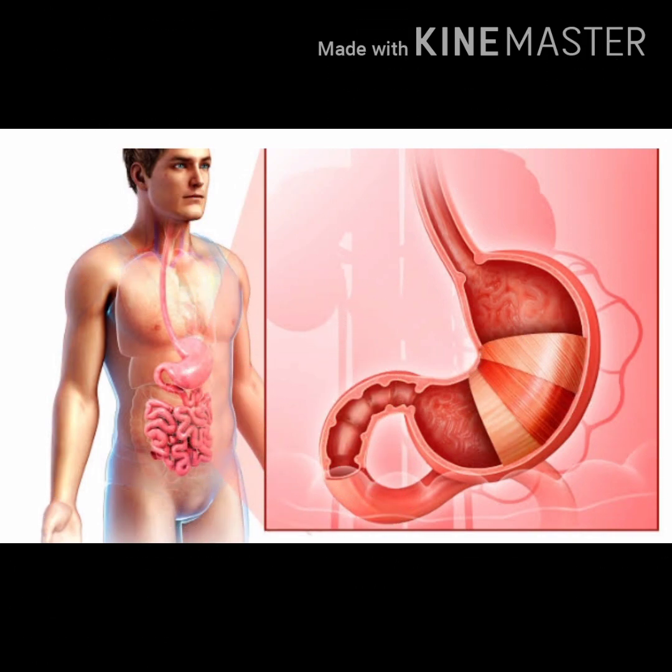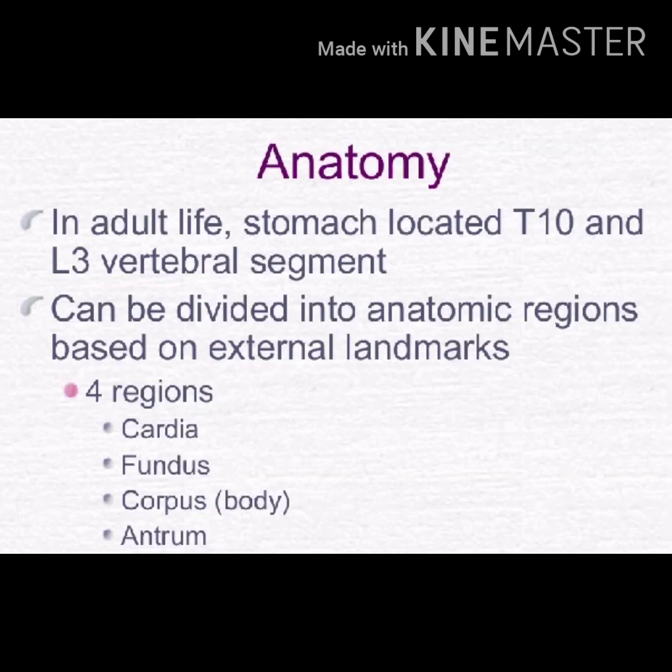First we want to know where the stomach is located, how long it is, and what parts it has. The stomach is located at the T10 to L3 vertebral segment and can be divided into anatomical regions based on external landmarks. It has four different regions: the first is cardia, second is fundus, third is body, and fourth is antrum.